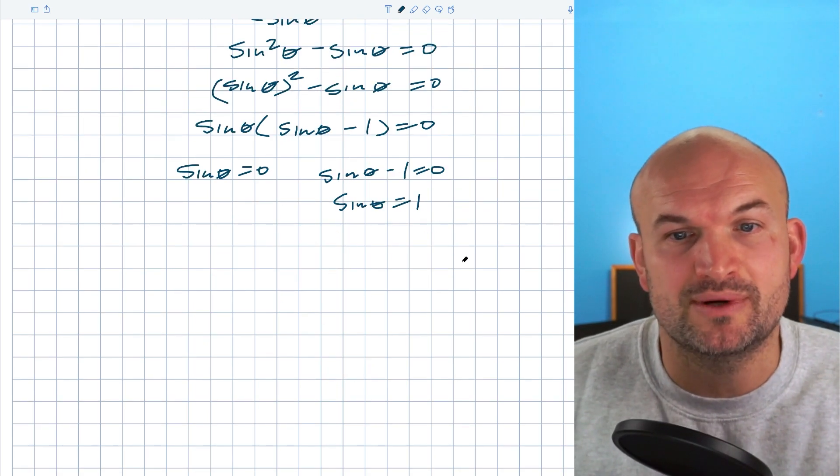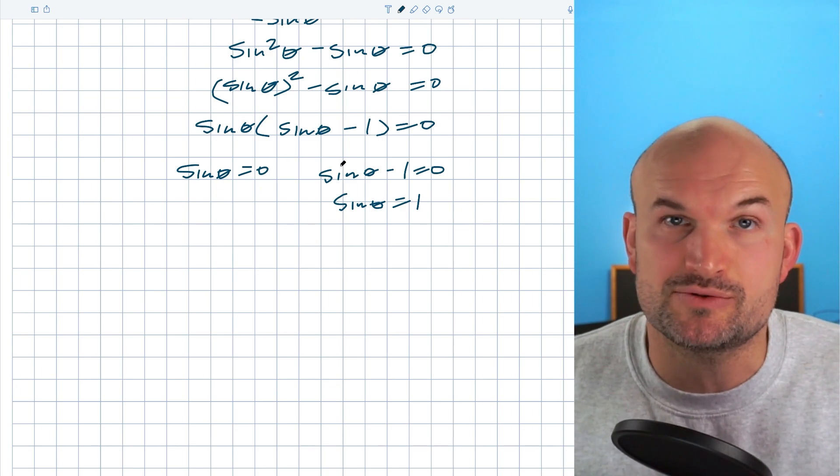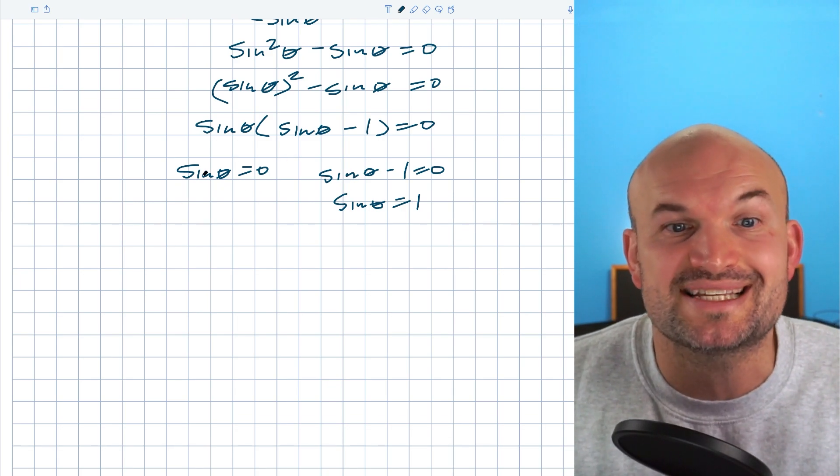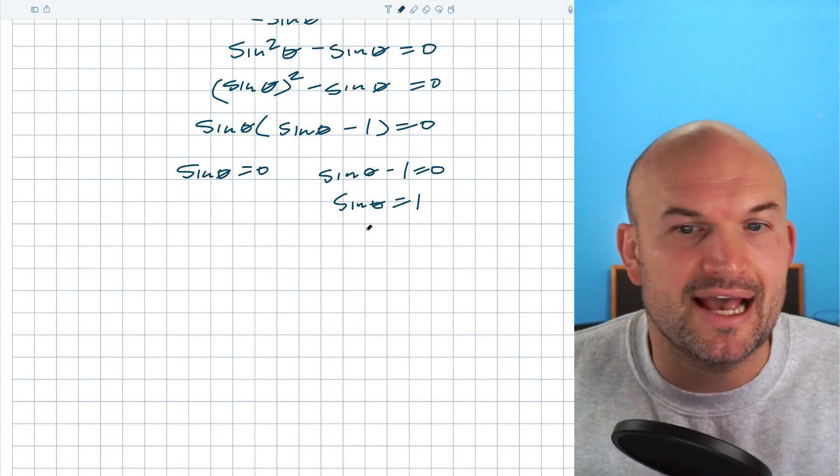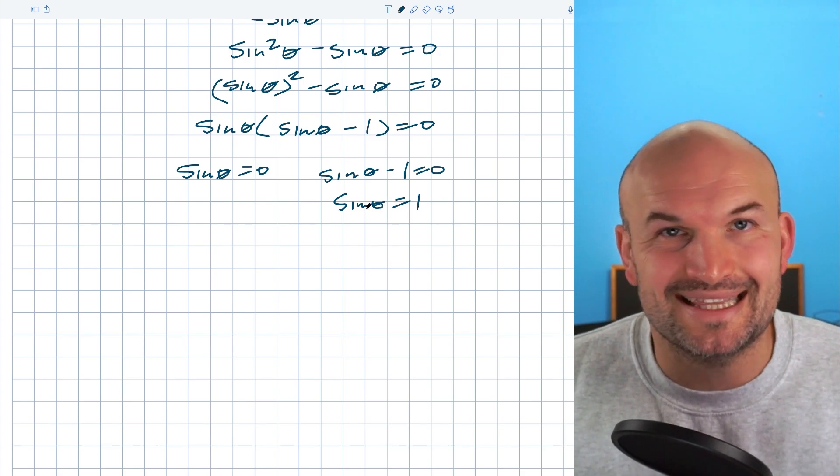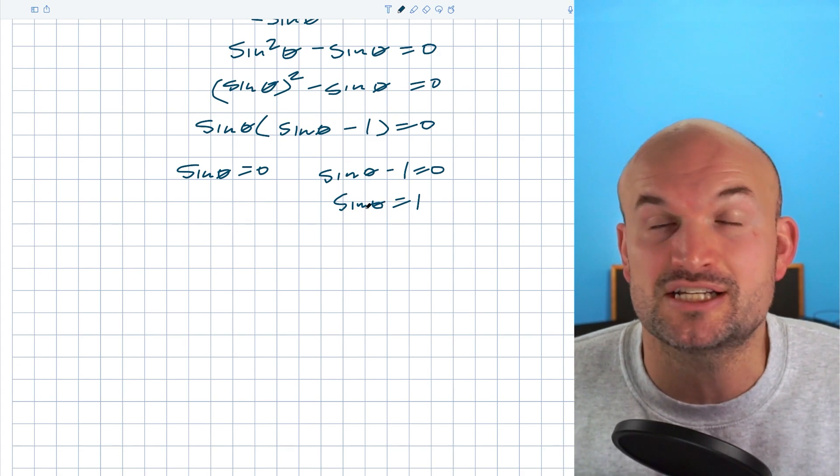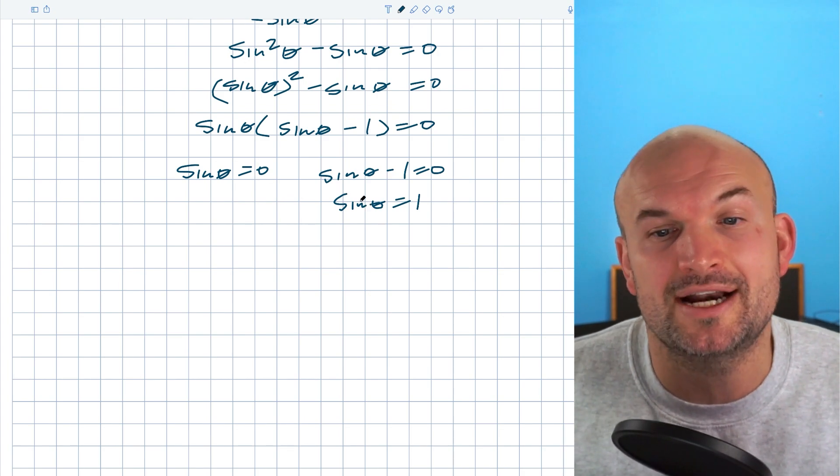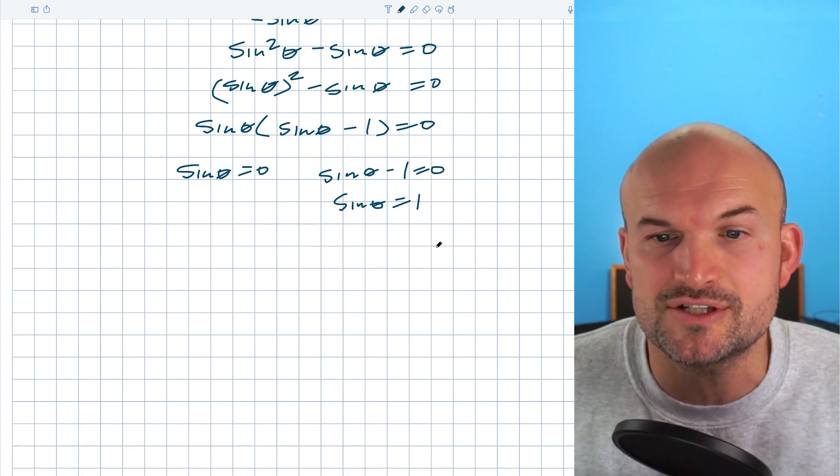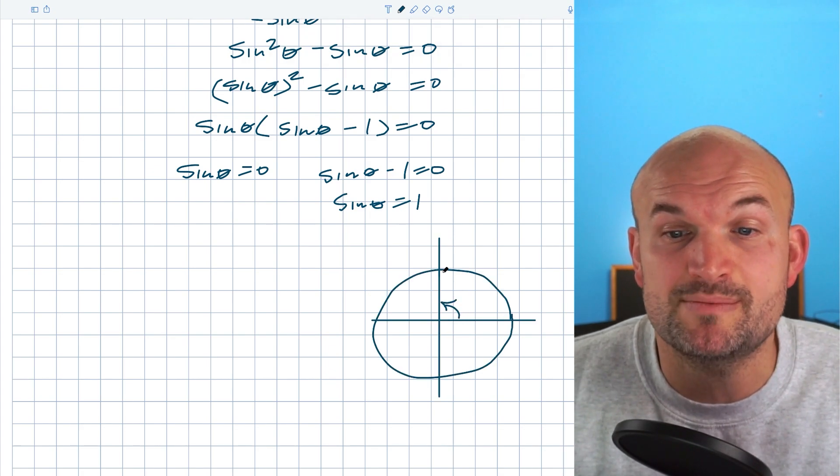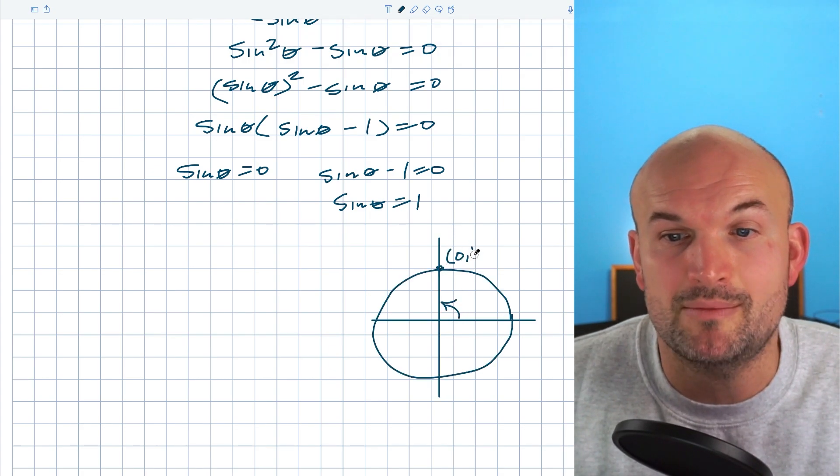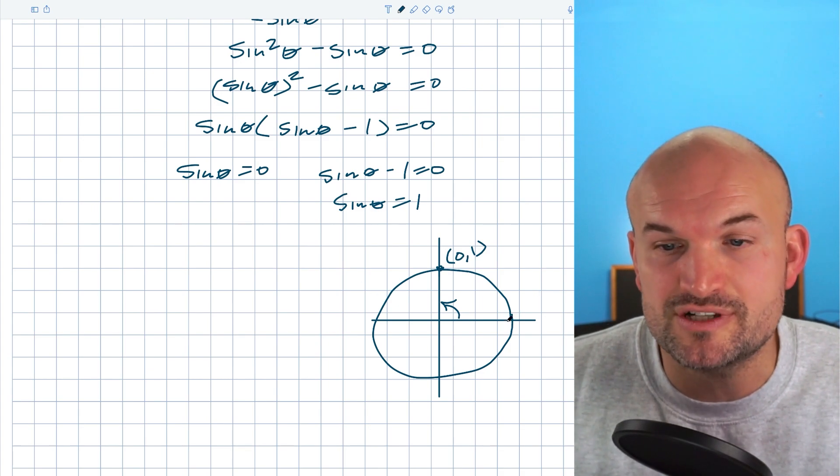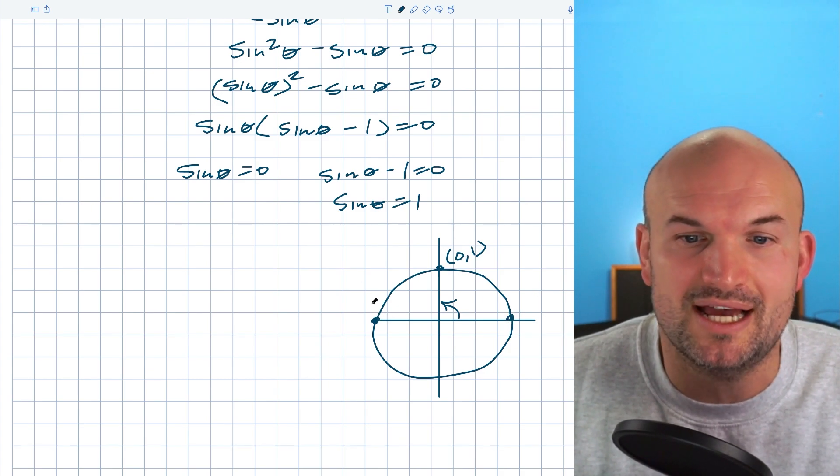Now to solve these equations, we have to understand the angle that's going to produce these results. Remember both these equations say the sine of what angle equals zero and the sine of what angle equals one. The easiest way to understand these angles is looking at the y coordinates using the unit circle. So if I draw a quick little unit circle, I can recognize the y coordinate is going to be one at this angle which is zero comma one, as well as the y coordinate is going to be zero at this angle and this angle.